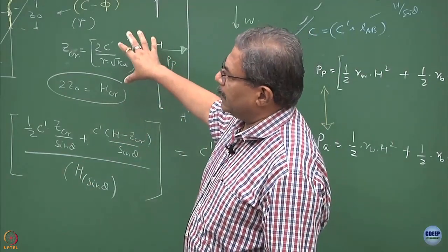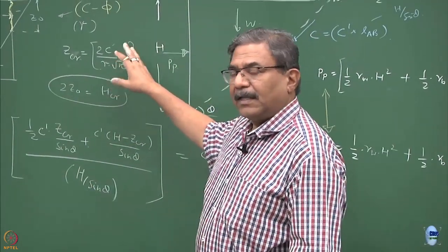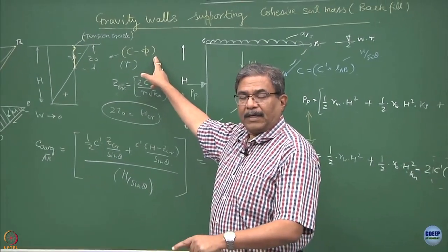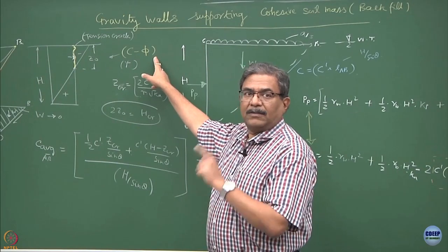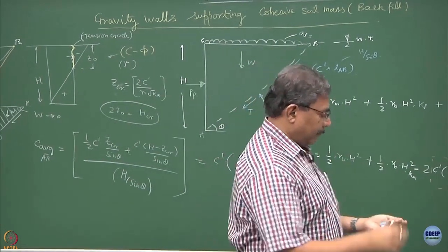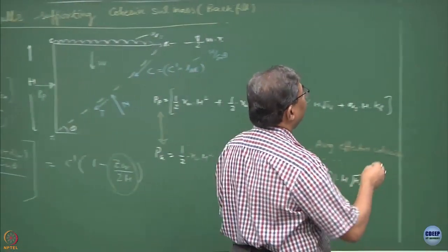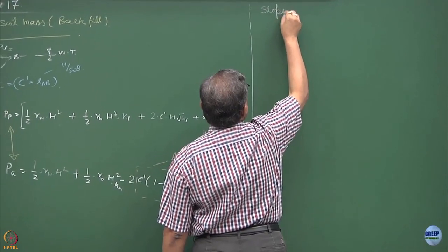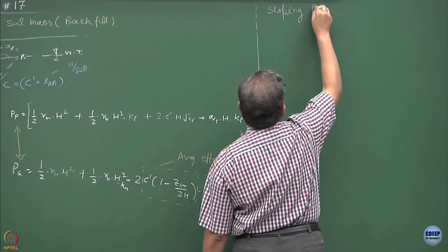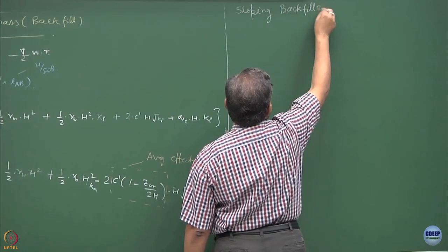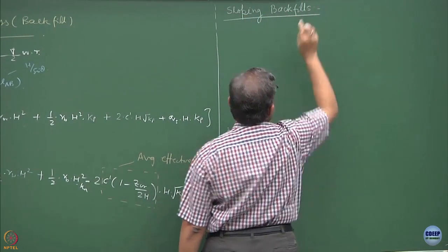One of the deviations we did from Rankine's earth pressure theory is that we introduced the concept of a C-phi soil keeping a vertical wall and horizontal backfill. Now we are going to deviate further from this situation where we find out the earth pressures for sloping backfills.